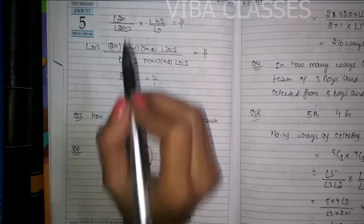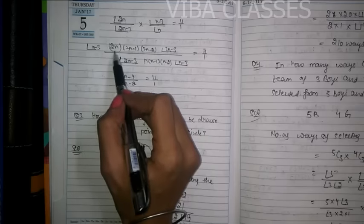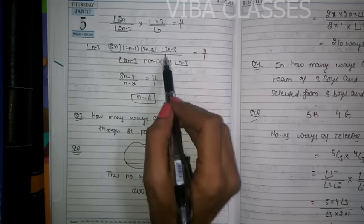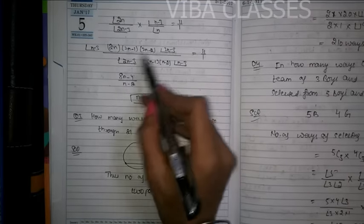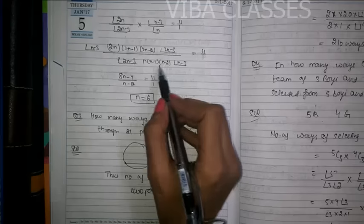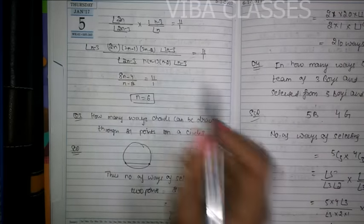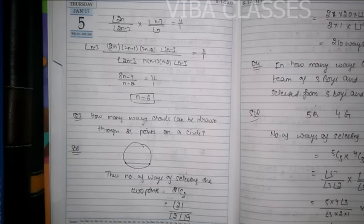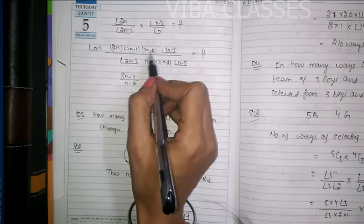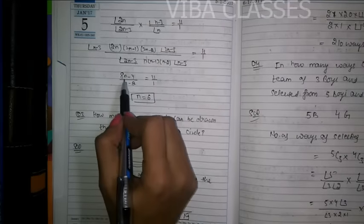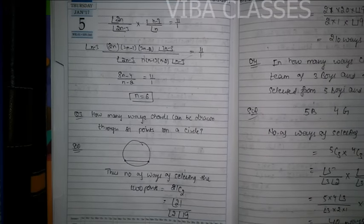Now expand factorial 2n as 2n, then 2n-1, then 2n-2, then 2n-3; the factorial (2n-3) in the denominator cancels out. For factorial n, open as n, n-1, n-2, and factorial (n-3) cancels out. The n and (n-1) terms cancel, leaving 8n-4 upon (n-2) equals 11 upon 1. Cross multiply and you get n equals 6.